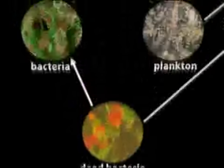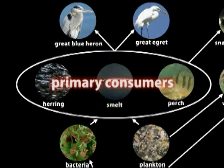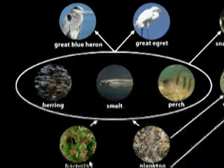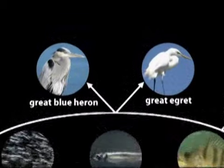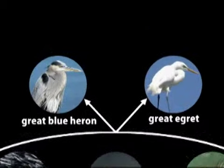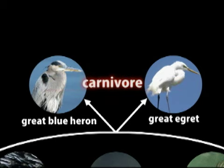Several fish live in the wetlands, such as the herring, smelt, and perch. These fish are the primary consumers, since they are the first to obtain energy from a source that they do not create themselves. The fish are then eaten by various species of birds, such as the great blue heron and the great egret. These are the secondary consumers. Since they eat fish, they are called carnivores, but more specifically, they are called pescavores.